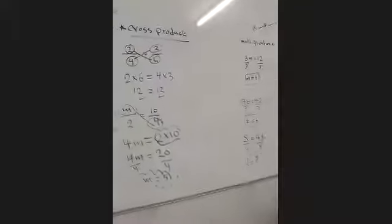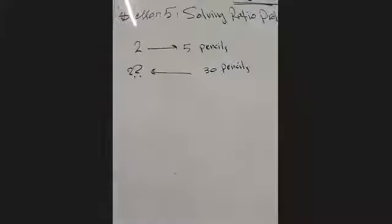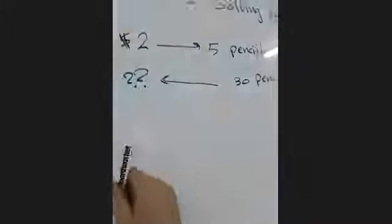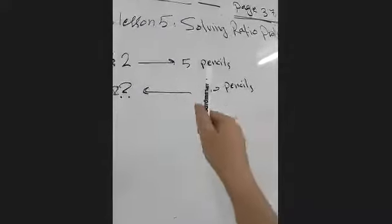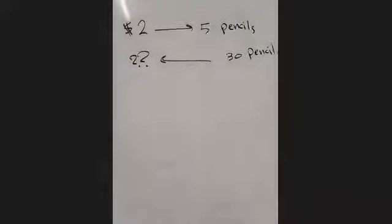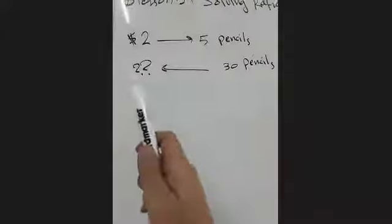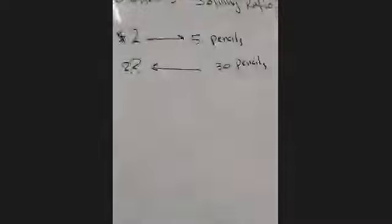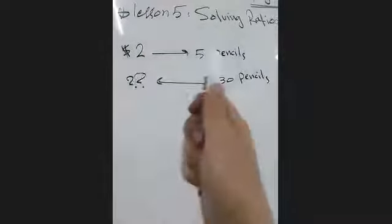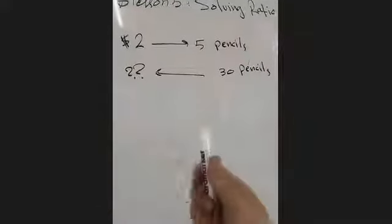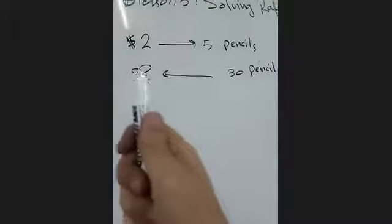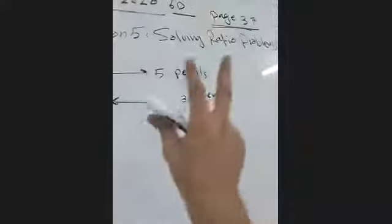Okay, let's go to our lesson. Let's take this example: if I have two dollars and I can buy five pencils, how many dollars do I need to spend to buy 30 pencils? This we call a ratio problem. I will replace the question mark with a variable — let's say M. I will make my fractions: 2 over M equals 5 over 30.